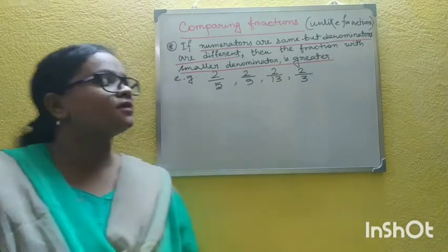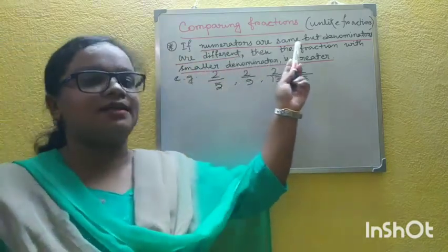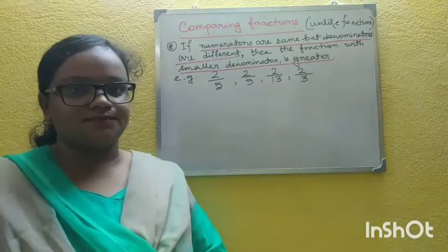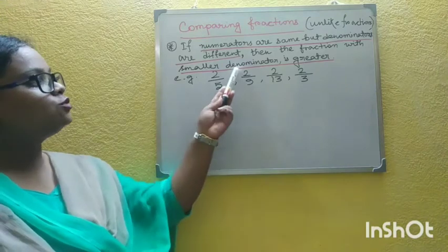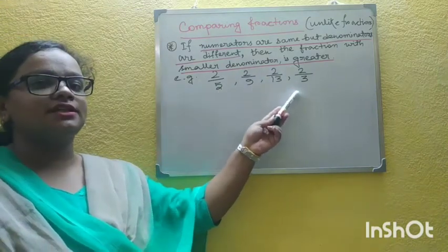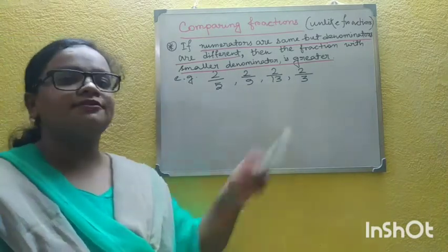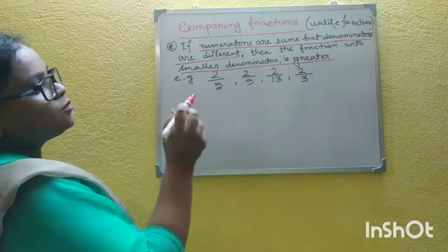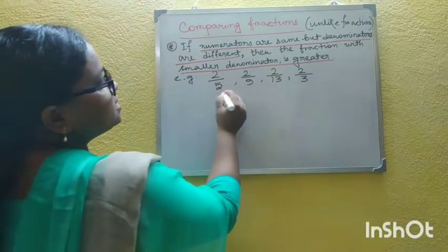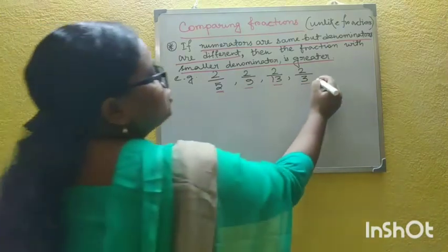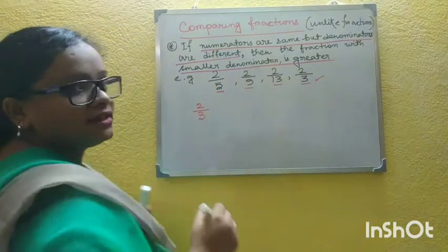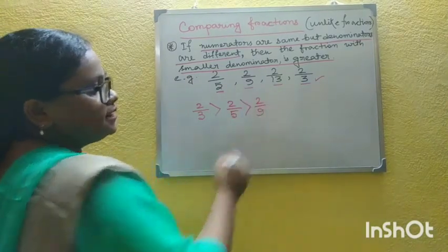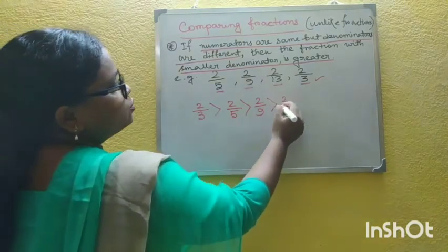Now, how will you compare unlike fractions? Rule 1: if numerators are the same but denominators are different, then the fraction with the smaller denominator is greater. Look here, students: 2/5, 2/9, 2/13, 2/3. All the numerators are the same but the denominators are different. The smallest denominator is 3, so 2/3 is the greatest. Then 2/5, then 2/9, and the smallest fraction is 2/13.